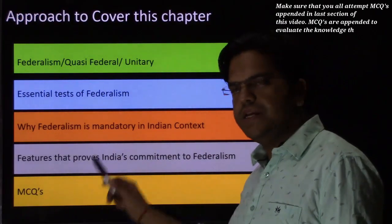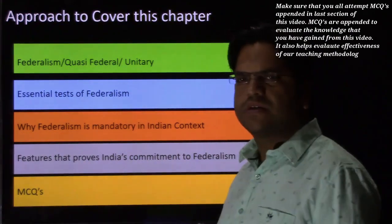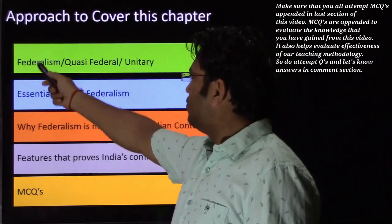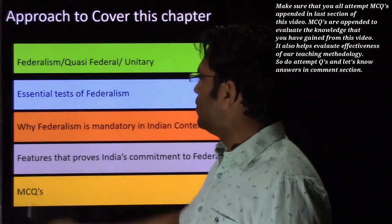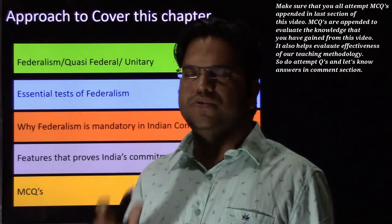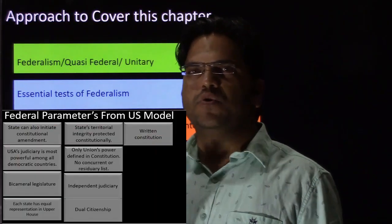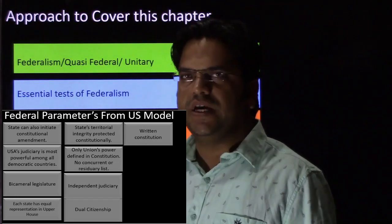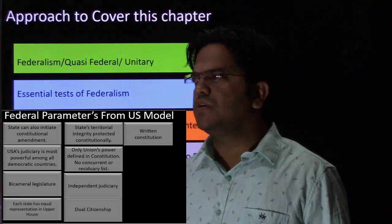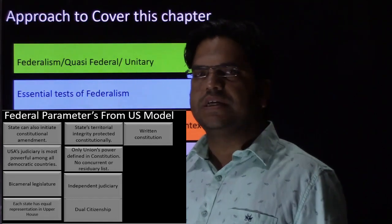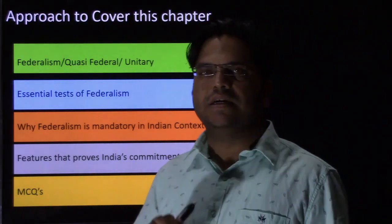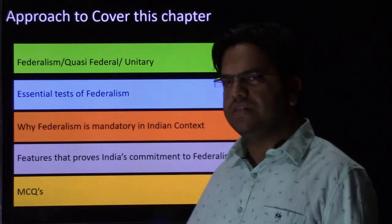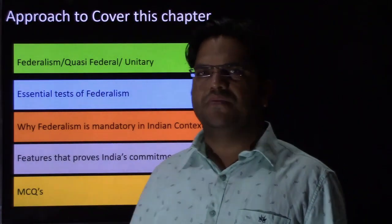We have divided this chapter mainly into five verticals. In the first vertical, we will discuss what is Federal, what is Federalism, what is Quasi-Federal, and what is Unitary — all are forms of government. Thereafter, what is the essential test of Federalism? If you take the US model of Federalism, they have their own components, and that model cannot be applied to each and every country. Political scientists came up with different tests to decide whether a country's government is Federal or not.